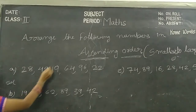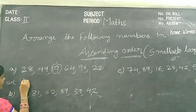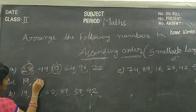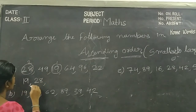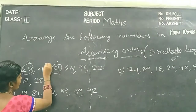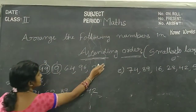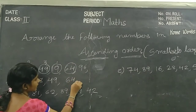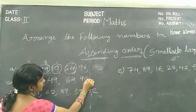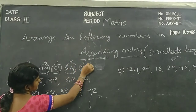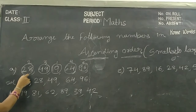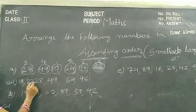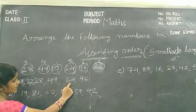In this example, what is the smallest number, children? Nineteen. What is the smallest number? Nineteen. Next number is 22. Next number is 28. Next number is 49. Next number is 64. Next number is 96. Answer is: 19, 22, 28, 49, 64, 96.